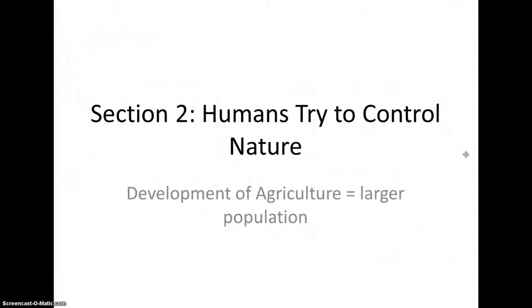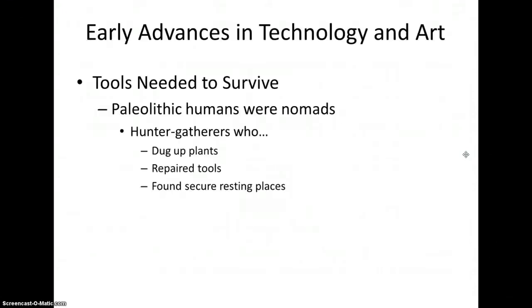Section 2: Humans tried to control nature. The development of agriculture leads to a larger population. Paleolithic humans were nomads, which meant they moved in search of food. In addition to this, they also dug up plants, made and repaired tools, and found secure places to rest. They also hunted animals, collected plant foods, and were hunter-gatherers.